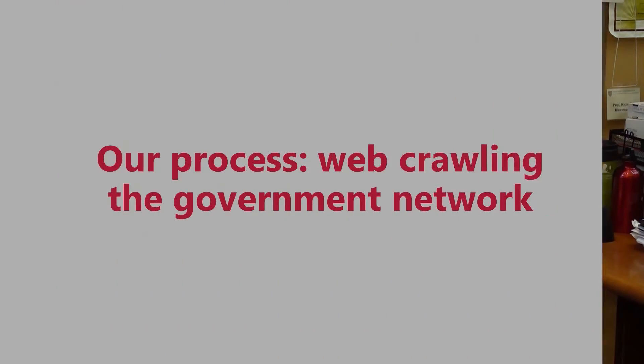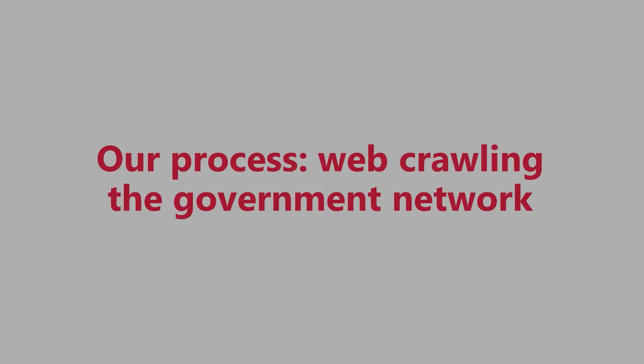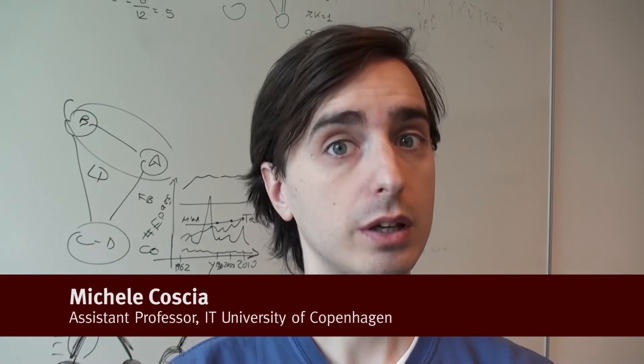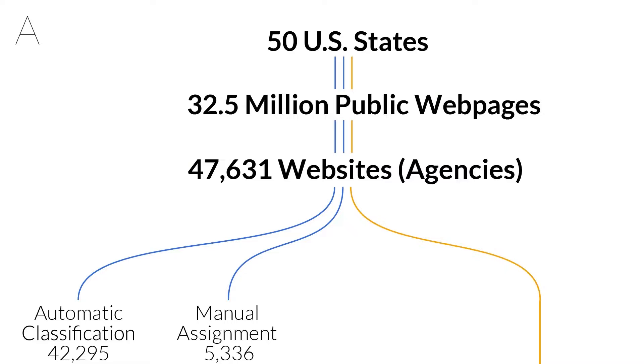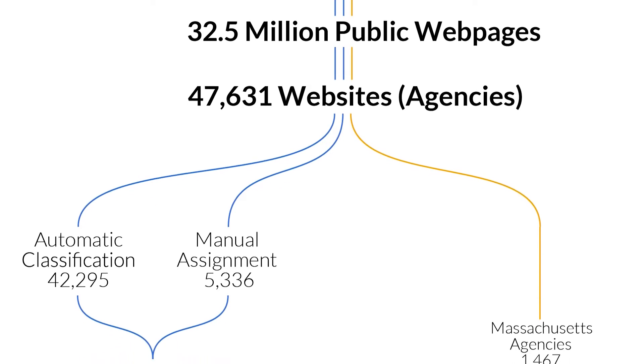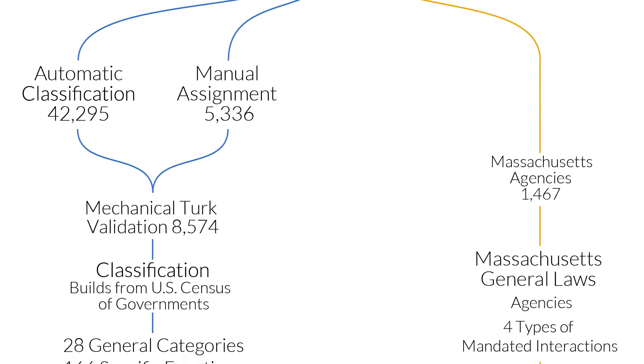Pretty much every agency nowadays in the United States has a website. On that website they describe their activities and they link to the websites of other agencies with whom they interact or that they think citizens might also want to visit. So we downloaded the data — all 53,000 websites of state government agencies on the web. That gives you already an impression: 53,000 websites.